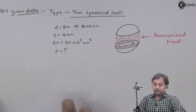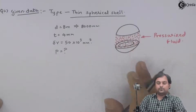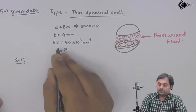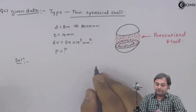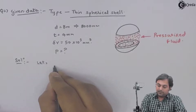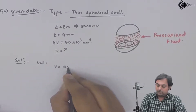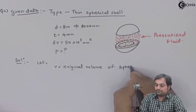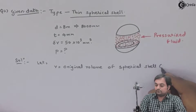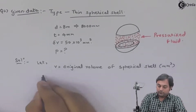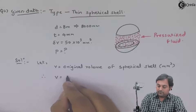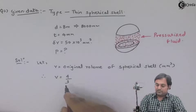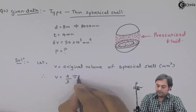In the solution, since change in volume is given, let V equal the original volume of the spherical shell in mm³. We know the formula for calculating the volume of a spherical shell is V = (4/3)πr³.